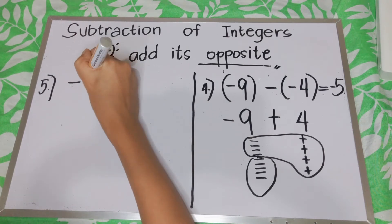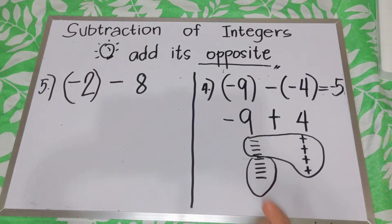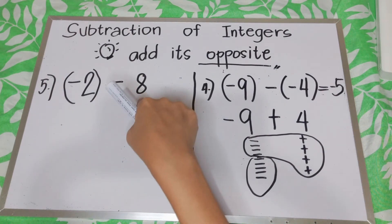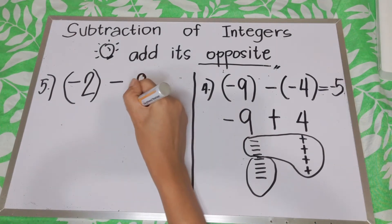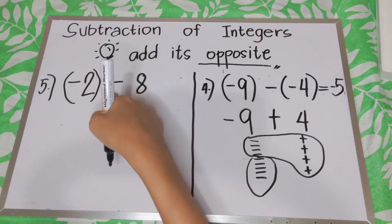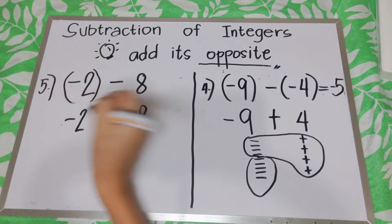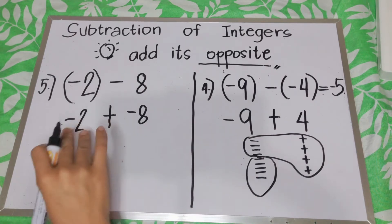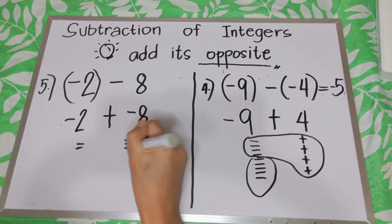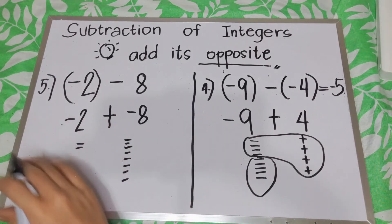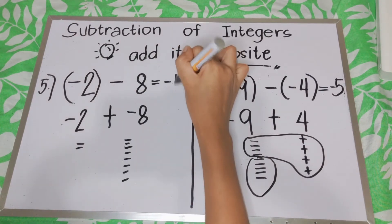Negative 2 minus 8. Be careful — 8 here is positive, so the opposite of 8 will be negative 8. Then we're going to add, and negative 2 will remain. So we have addition of both negatives. Since they are both negative, we will just combine: how many negatives? We have negative 10.